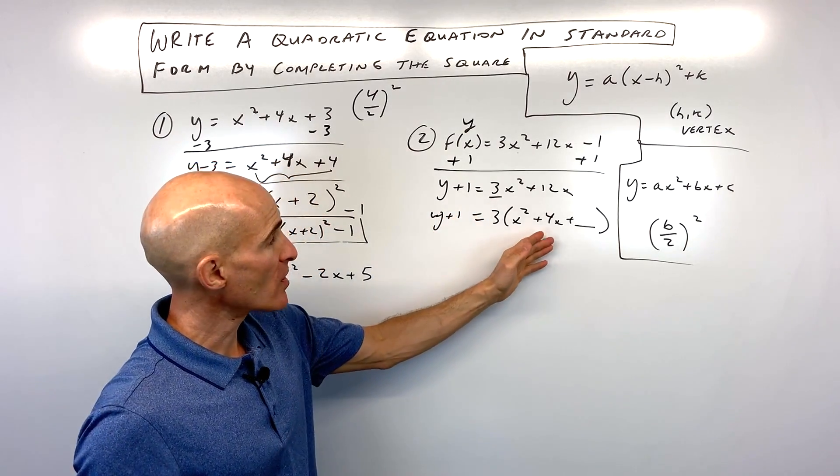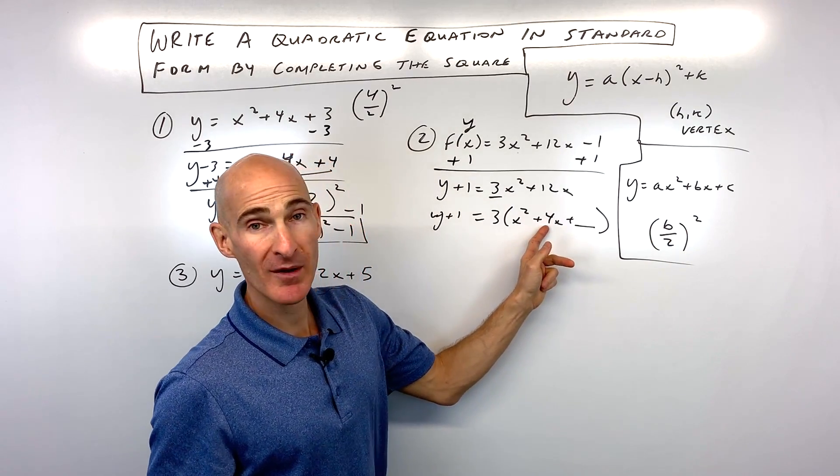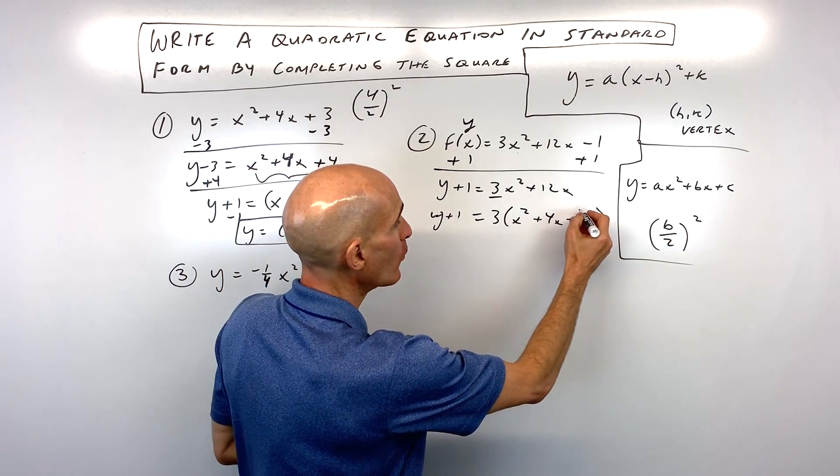So now what I'm going to do is I'm going to complete the square. So we're going to take b divided by 2 and square it. So 4 divided by 2 is 2. 2 squared is 4.